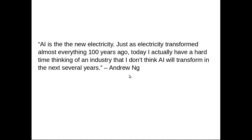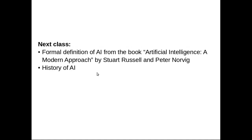We already saw some examples of how AI is being used in different fields. I will stop here for today's class. In the next class we will look at a more formal definition of AI from the book Artificial Intelligence: A Modern Approach, which is prescribed in our syllabus and will be our main book. It has four editions — the third edition is definitely out. It is written by two well-known authors: Stuart Russell, professor at University of California, Berkeley, and Peter Norvig, director of research at Google.